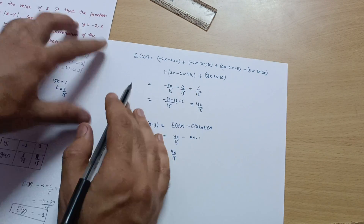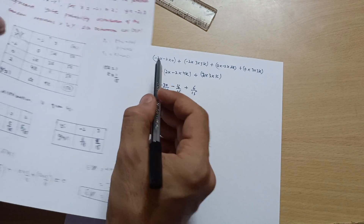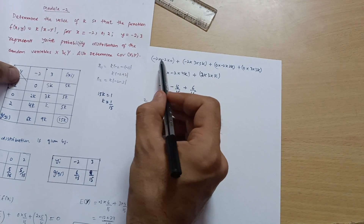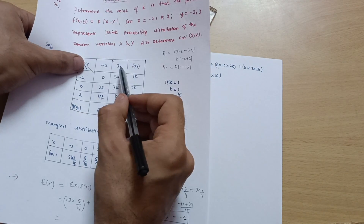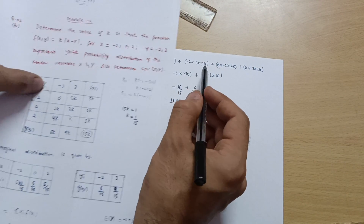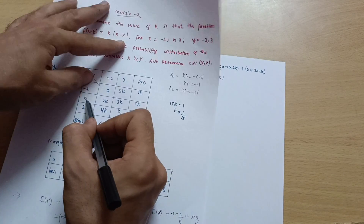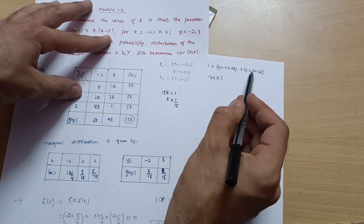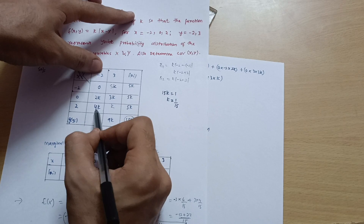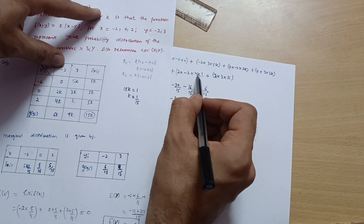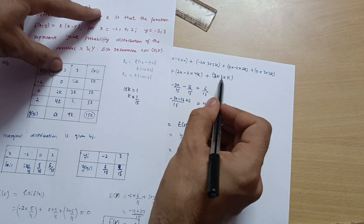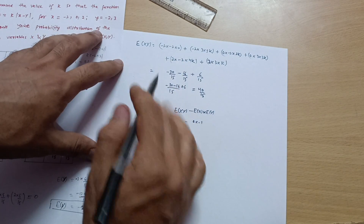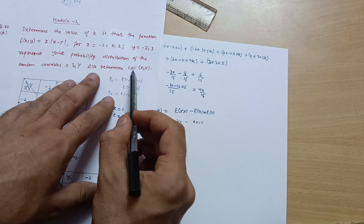Next, calculate E[XY] using the joint table. E[XY] = (-2)(-2)(0) + (-2)(3)(5k) + (0)(-2)(2k) + (0)(3)(3k) + (2)(-2)(4k) + (2)(3)(k). Substituting k = 1/15 and computing all terms gives E[XY] = -40/15.